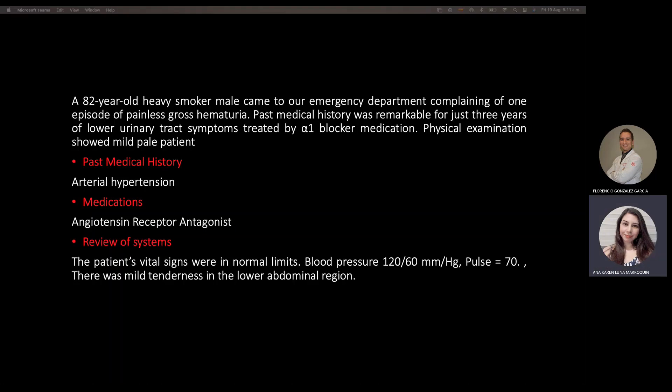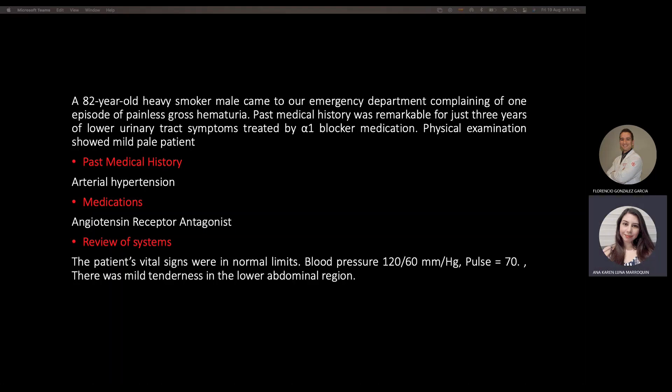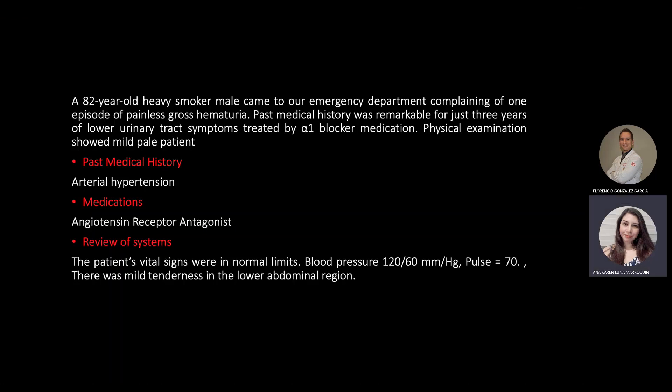Physical examination showed a male pale patient with arterial hypertension as medical history, and vital signs were within normal limits. Blood pressure was 120 over 60 and pulse of 70. There was mild tenderness in the lower abdominal region.